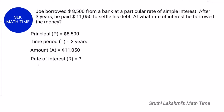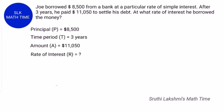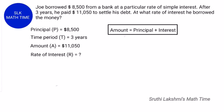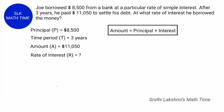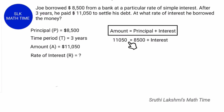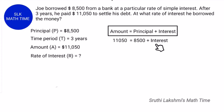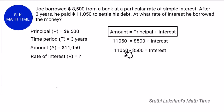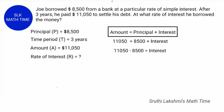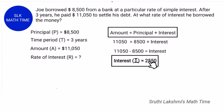We have to find the rate of interest R. Since we know the principal and the amount, we can easily find the simple interest using the formula: amount = principal plus interest. Let's substitute: $11050 = $8500 + interest. When $8500 comes to the other side it becomes $11050 minus $8500, which gives us $2550. So the interest is $2550.